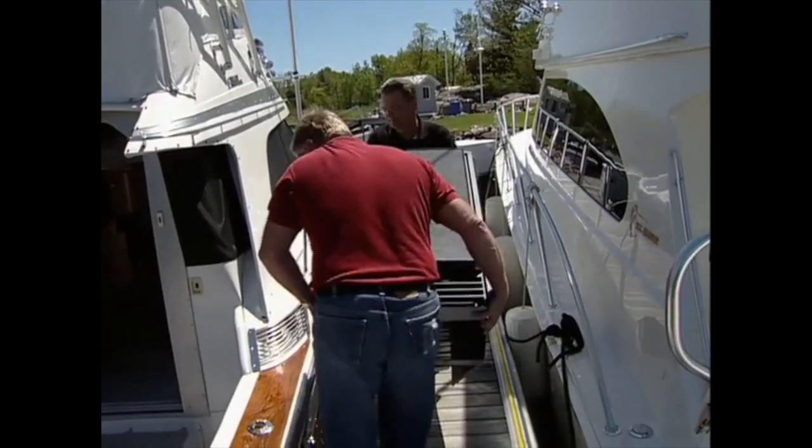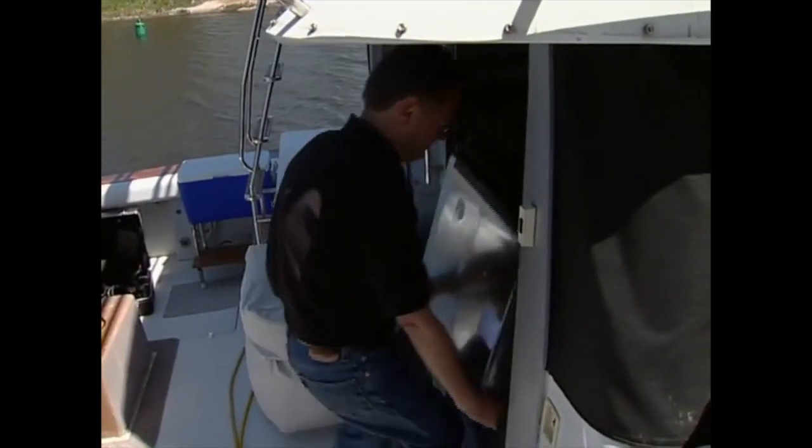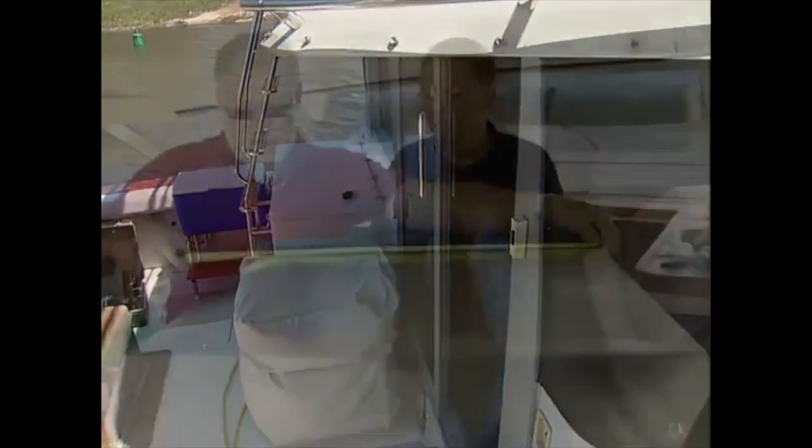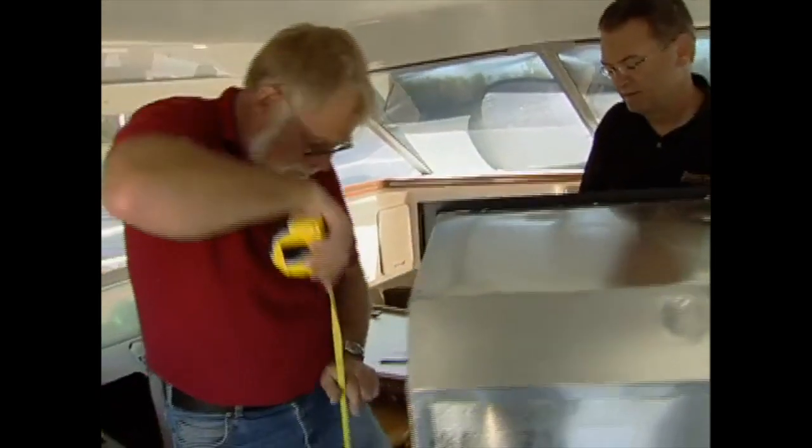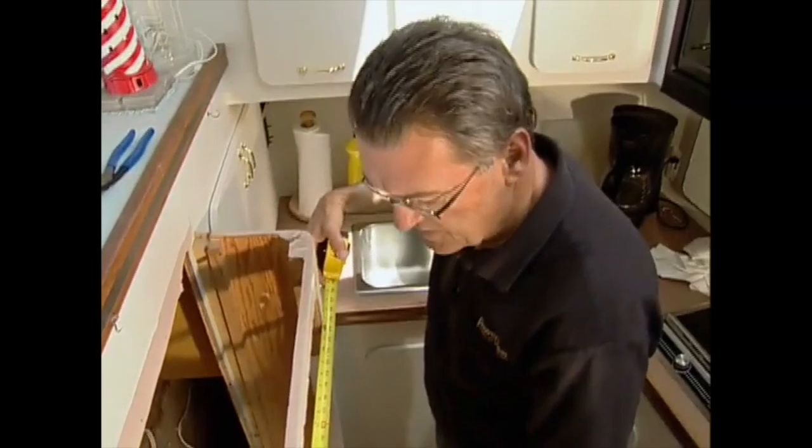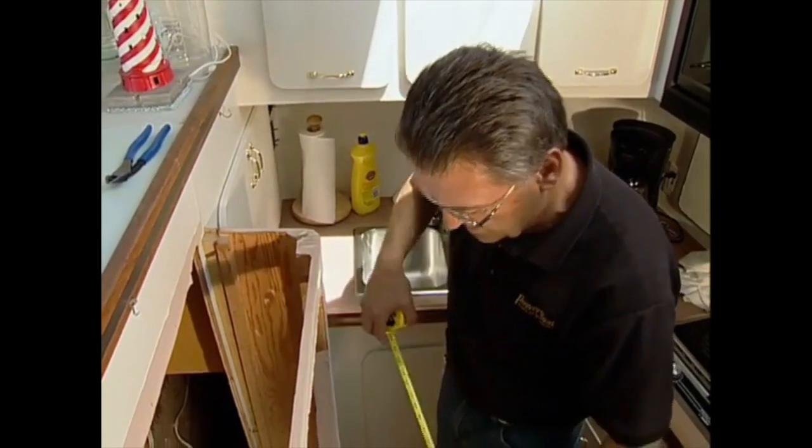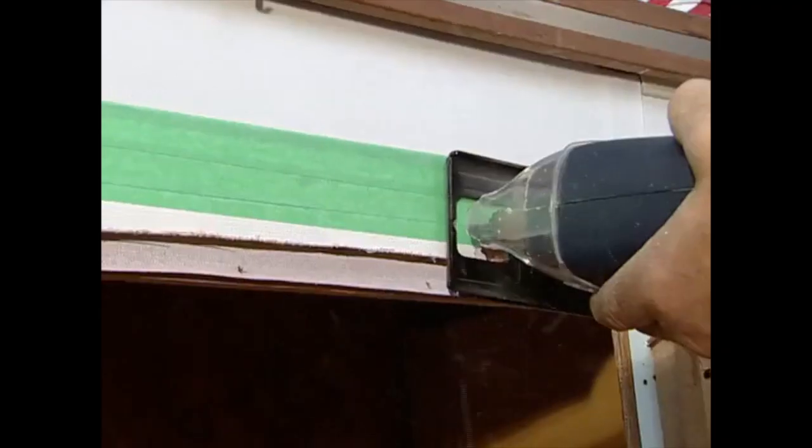Bob had checked the size specifications prior to ordering the new NovaCool refrigerator, but once we had the new refrigerator on board, the measurements were checked again to confirm that some modifications to the cabinet, both for height and depth, would be required. While the width was spot-on, measurements for the taller new unit had to be transferred to the cabinetry and the opening enlarged with a jigsaw.